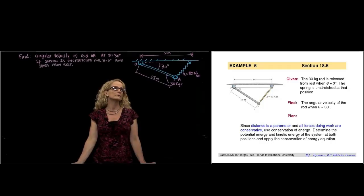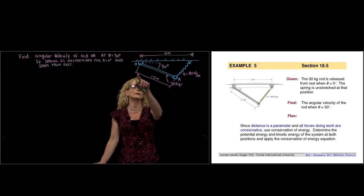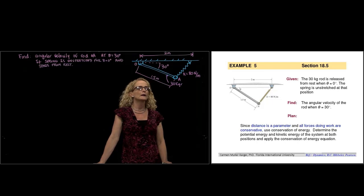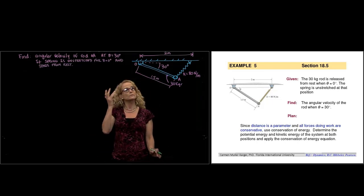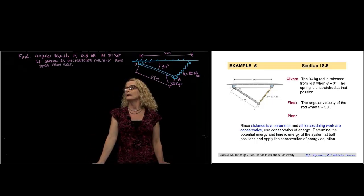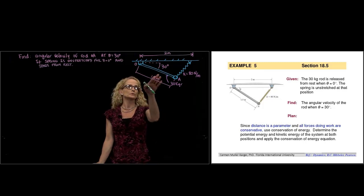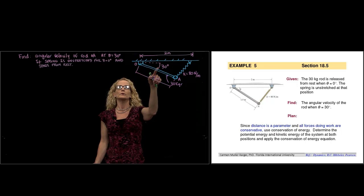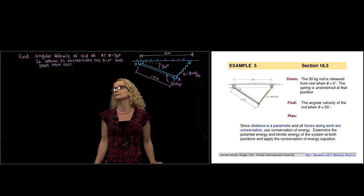We have here a rod OA with a length of 1.5 meters and 30 kilograms of mass. We are being asked to find the angular velocity of that rod at the position shown, at theta equals 30 degrees.